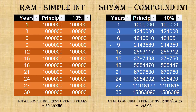Now, on completion of the term, Ram gets back 10 lakhs, which is the original principal amount, plus 30 lakhs of interest that he has withdrawn. Whereas Shyam receives a total of 1.58 crores. This highlights the magic of compounding on a small principal like 10 lakhs.